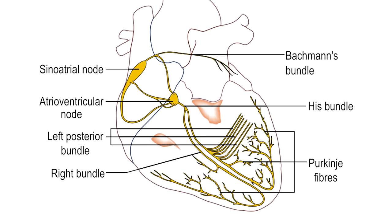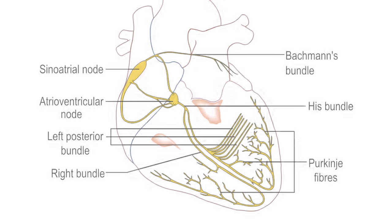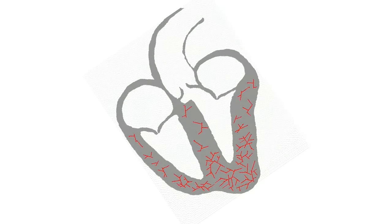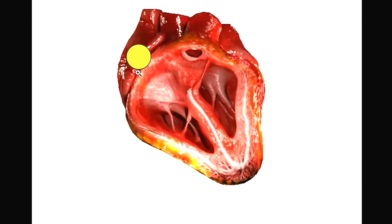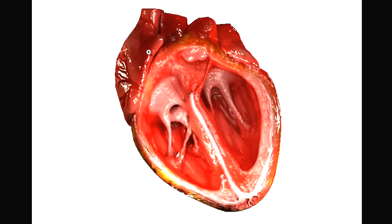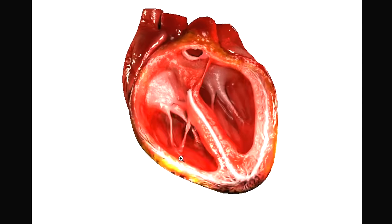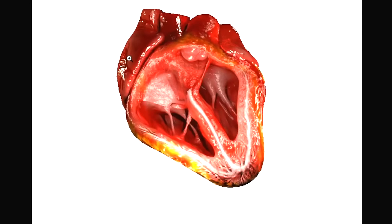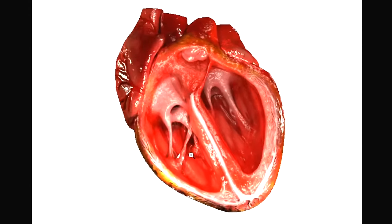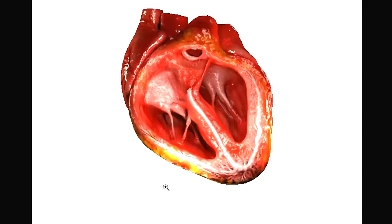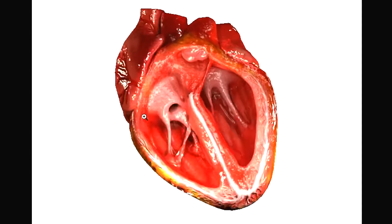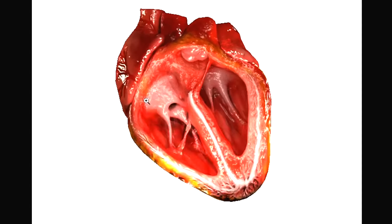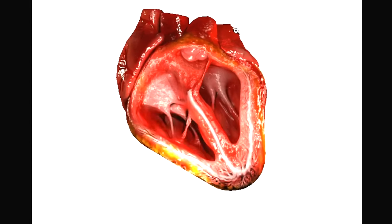This electric conduction system - the sinoatrial, the atrioventricular, and the His-Purkinje system - is activated in such a way that the electrical conduction goes and stimulates the heart in concert. The electrical conduction starts up here and then goes to the ventricle. The reason for that is so that the atria contract right before the ventricle. The purpose of that is to get the blood from the atria down into the ventricle to increase the size of the ventricle right before the ventricles contract. That causes an increase in preload and allows your cardiac output to be improved.